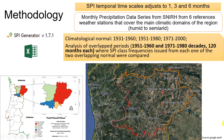SPI response time scales have been set to 1, 3, and 6 months, and were obtained for three climatological normals: 1931–1960, 1951–1980, and 1971–2000. The analysis focuses on the overlapping periods — the decades of 1951–1960 and 1971–1980, with 120 months each — where SPI class frequencies from each of the two overlapping normals were compared.